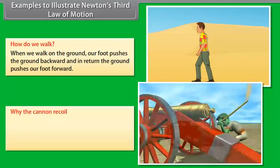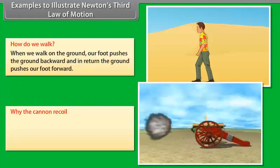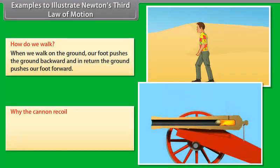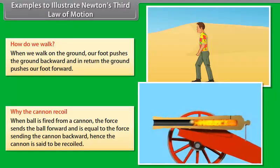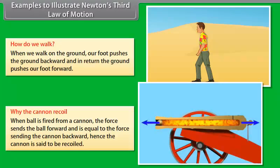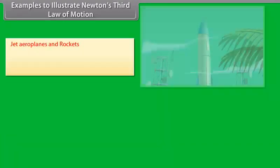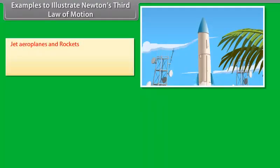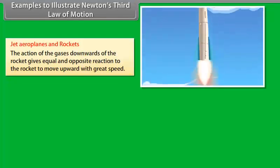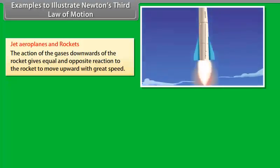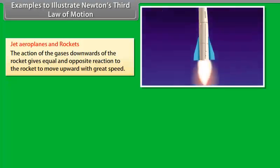Why does the cannon recoil? When a ball is fired from a cannon, the force sends the ball forward and is equal to the force sending the cannon backward. Hence the cannon is said to be recoiled. Jet airplanes and rockets: The action of the gases downwards of the rocket gives equal and opposite reaction to the rocket to move upward with great speed.